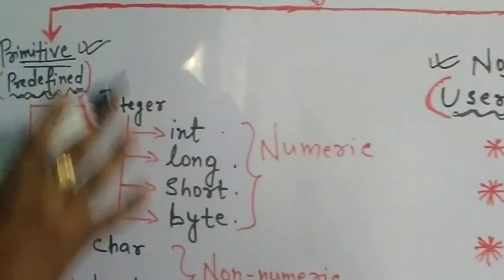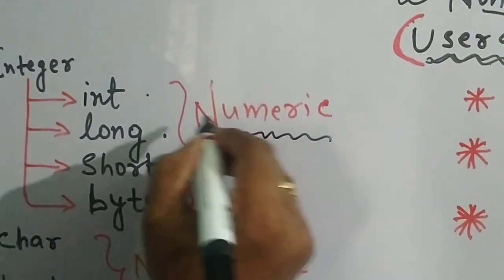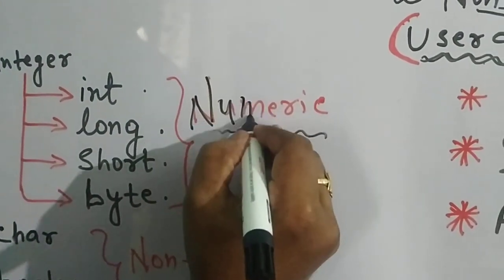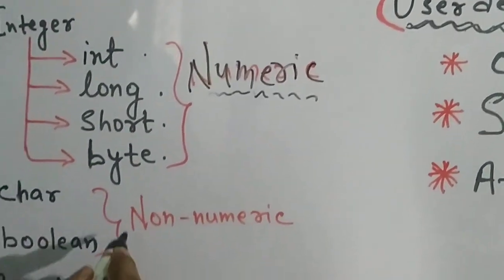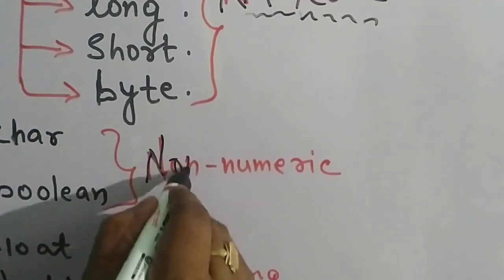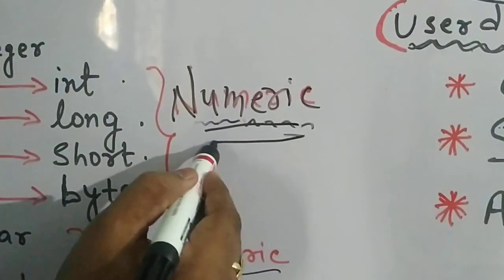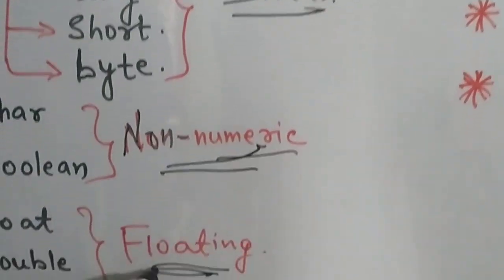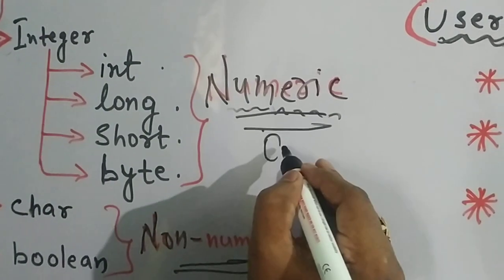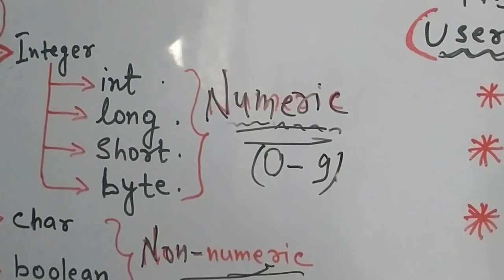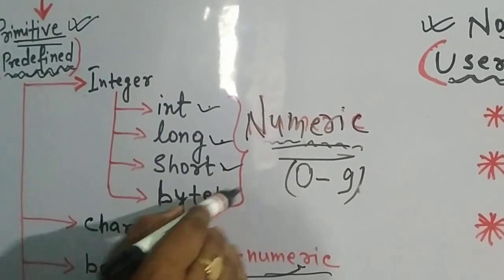Now see the primitive types first. Primitives are of three sections. First one is numeric (N-U-M-E-R-I-C), second one is non-numeric, and third one is floating. Numeric means integers — 0 to 9. Integers are of four types: int, long, short, and byte.